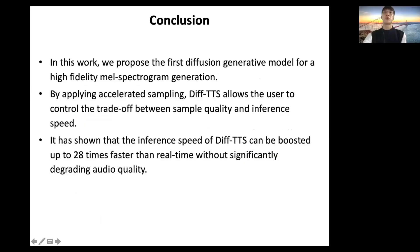In this work, we propose the first diffusion generative model for high-fidelity mel spectrogram generation. By applying accelerated sampling, Diff-TTS allows the user to control the trade-off between sample quality and inference speed. It has been shown that the inference speed of Diff-TTS can be boosted up to 28 times faster than real-time without significantly degrading audio quality.